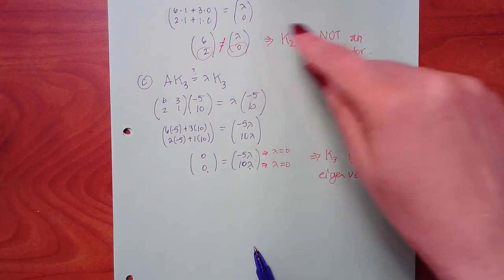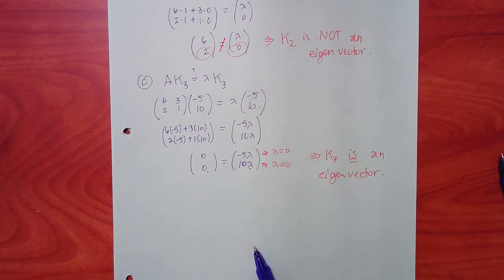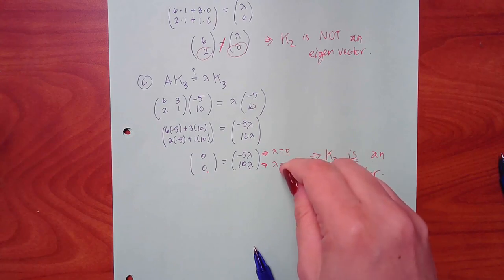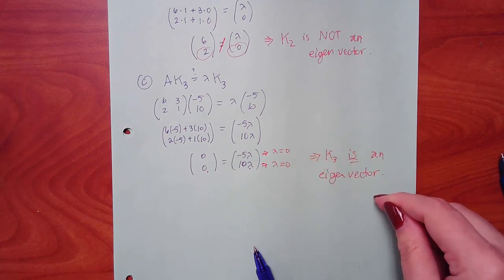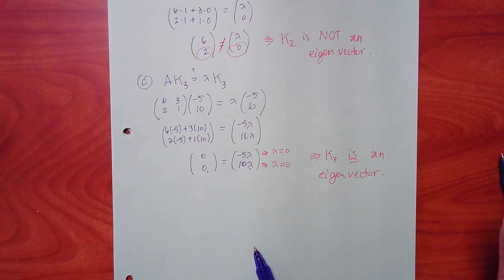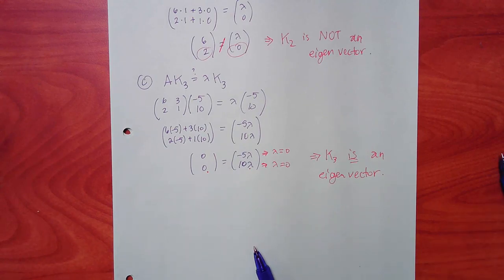So the first few homework problems are literally just this: multiplying A times K, multiplying lambda, and seeing if you get the same lambda for the top row and the bottom row. If you can't find a lambda at all, it's no. If you find one lambda for the top and a totally different lambda for the bottom, it's a no. Only if you get the same value for lambda on both rows will it be a yes.